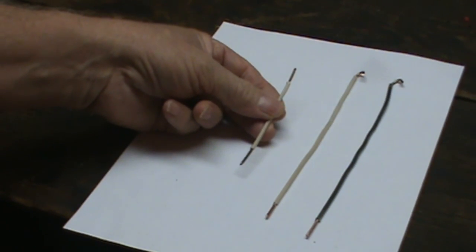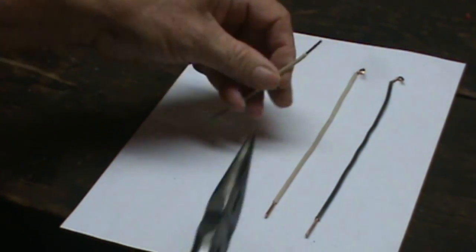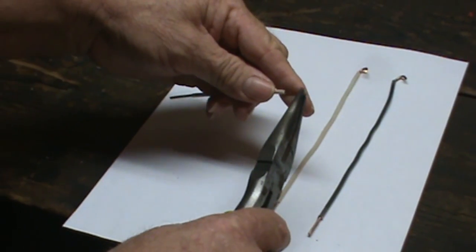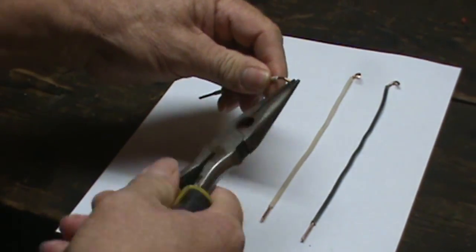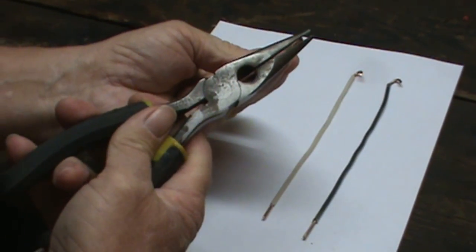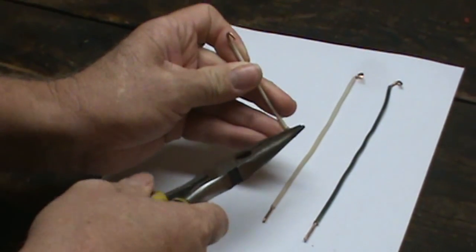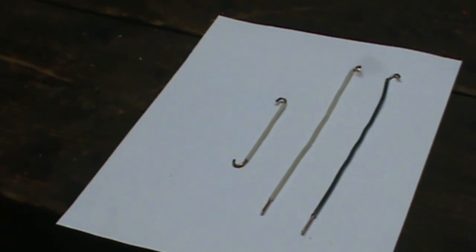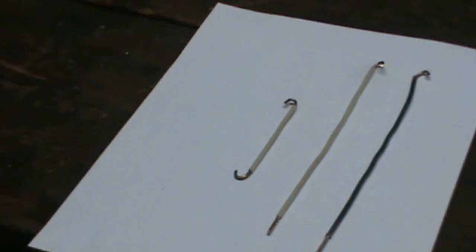You'll need six of four inch white. On them we want to bend both ends towards each other. So they look like that. And you need six of those.